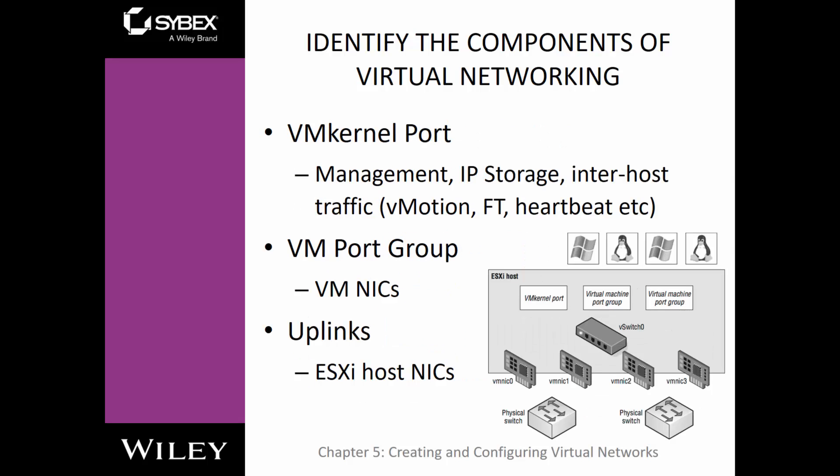We need to discuss different types of port groups. A VM kernel port allows for management, iSCSI, or Fibre Channel over Ethernet storage, and also allows for inter-host traffic such as vMotion, high availability, fault tolerance, and heartbeats. We also have VM port groups, which are our virtual NICs. Virtual NICs connect to a vSwitch, which then connects to physical ports. Uplinks are those physical connections between ESXi host NICs.